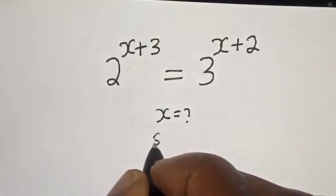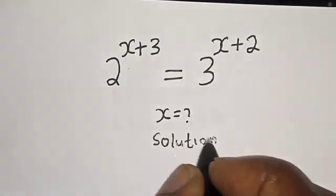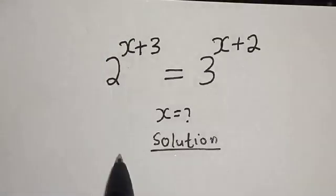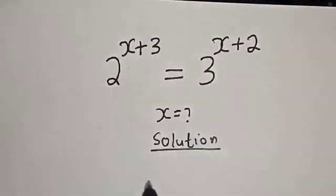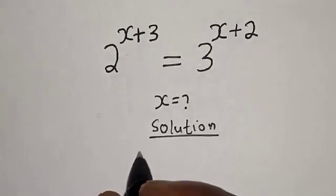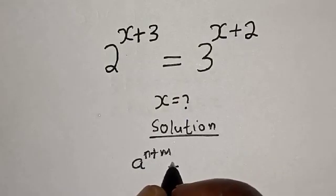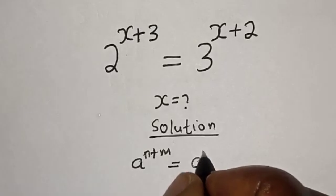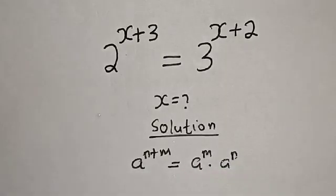Solution. We have 2 raised to power x plus 3 and 3 raised to power x plus 2. Take note of this exponential rule: a raised to power n plus m is equal to a raised to power m multiplied by a raised to power n.